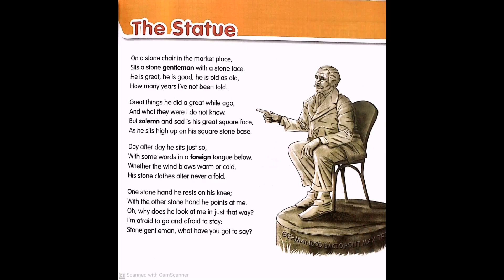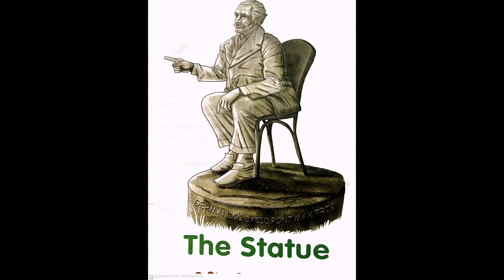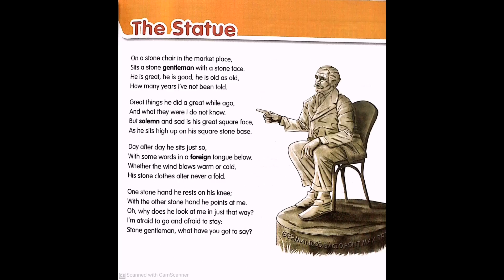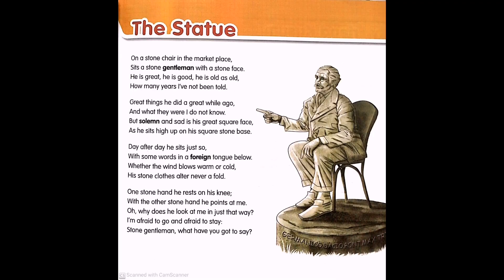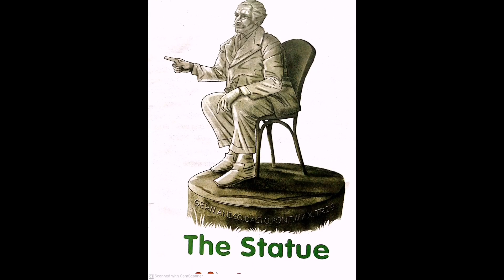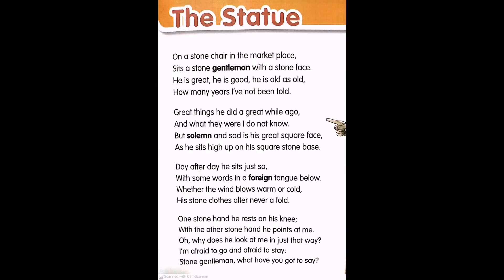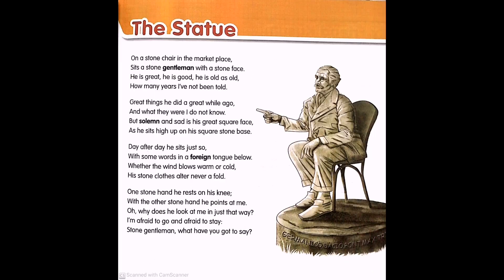Let's look into the hard words from the poem. 'Foreign' is an adjective meaning from a country other than your own. 'Gentleman' is a noun used to refer to a man with good manners or high social status. 'Statue' means a metal or stone figure of a person or animal. 'Solemn' is an adjective meaning serious or not happy.